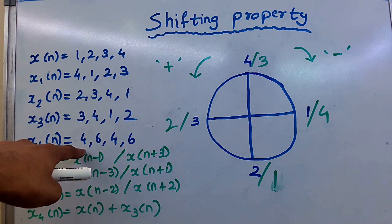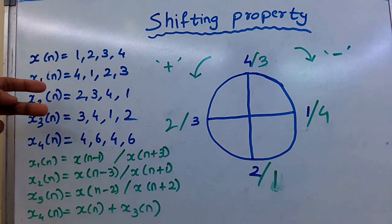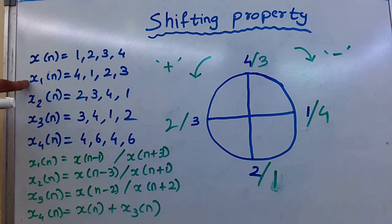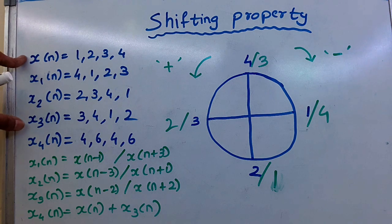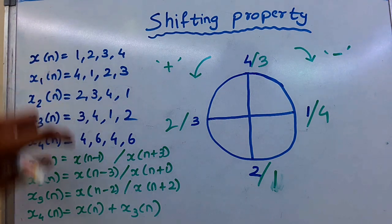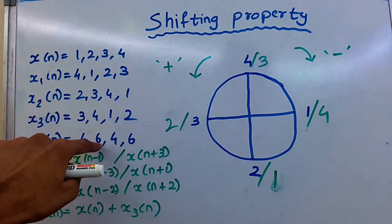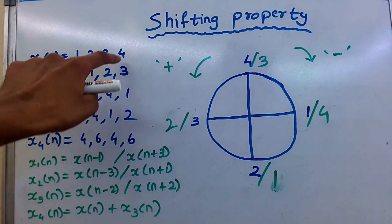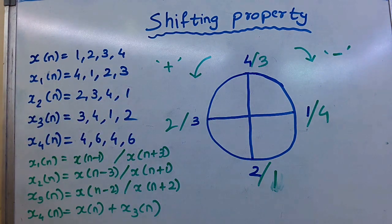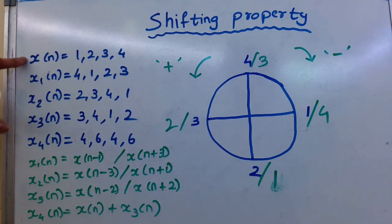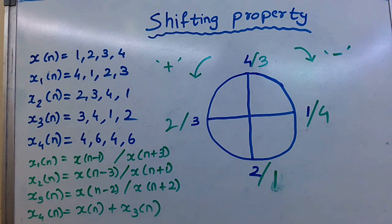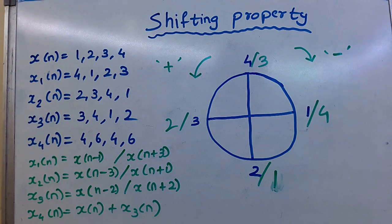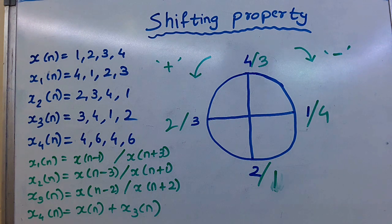This means it is the addition of two samples. We observe that if we add x of n and x3 of n, each value gives us this result. Like x of n plus x3 of n: 1 plus 3 equals 4, 2 plus 4 equals 6, 3 plus 1 equals 4, 4 plus 2 equals 6. The addition of these two gives x4 of n. Now we have shifted values, and their DFT we already discussed.